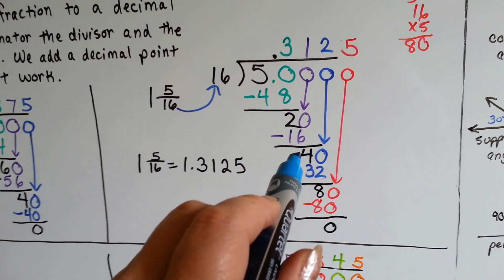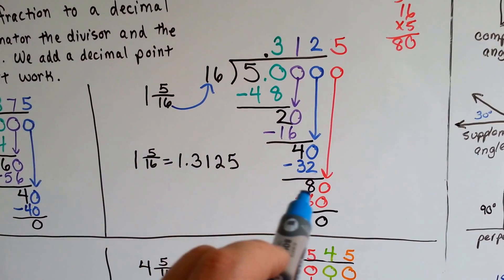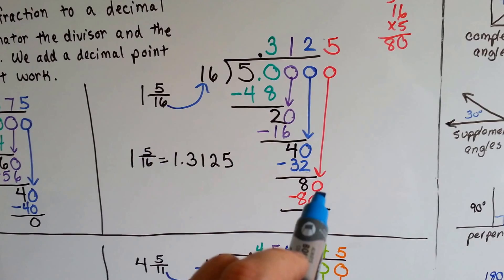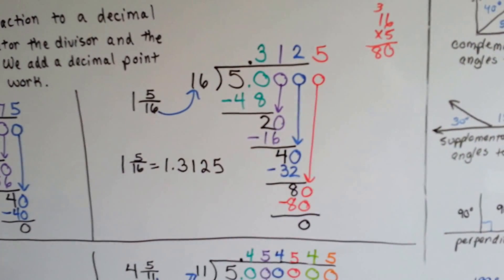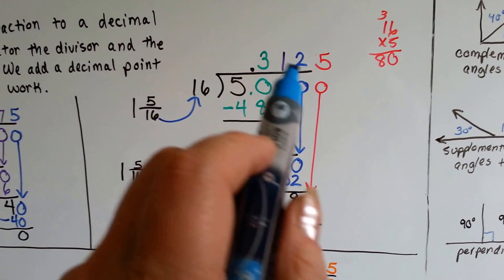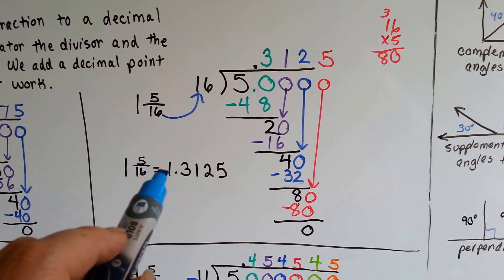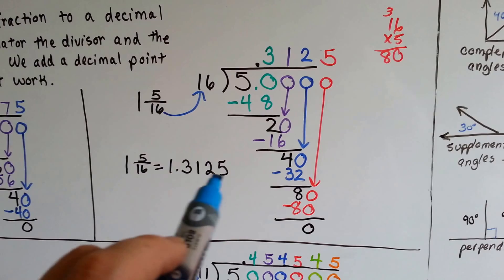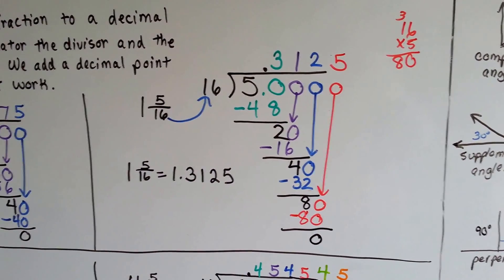16 goes into 40 two times. That's 32. We do our subtraction and get 8. We tack on another 0 and get 80. 16 fits into 80 five times perfectly. So we know that 5/16 becomes .3125. We tack our one whole number back on the front and we end up with 1.3125 as the decimal point. That's 3,125 ten-thousandths.